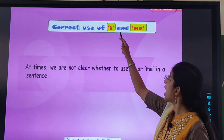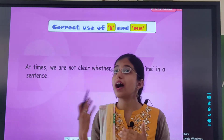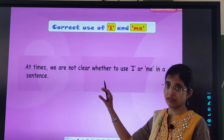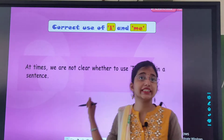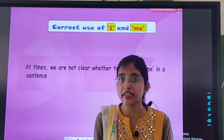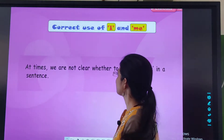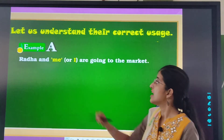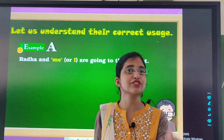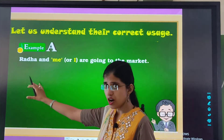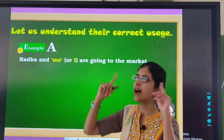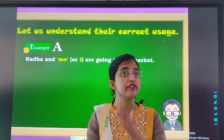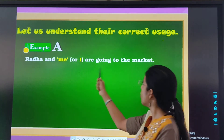Correct use of I and Me. When should we use I, and when should we use me? At times we are not clear whether to use I or me in a sentence, so today we will see how to identify that. Let us understand their correct usage. Example A: Radha and — should we use me or I? — are going to the market.